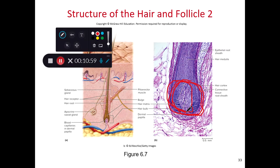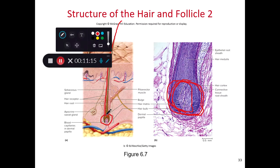When somebody has electrolysis done, an electric current is sent down the shaft of the hair, through the root, all the way down to the bulb and matrix. This electrically kills those cells responsible for causing the hair to grow. Repeated treatments can kill all of those cells and make it so that you no longer have hair growing in that part of your body.